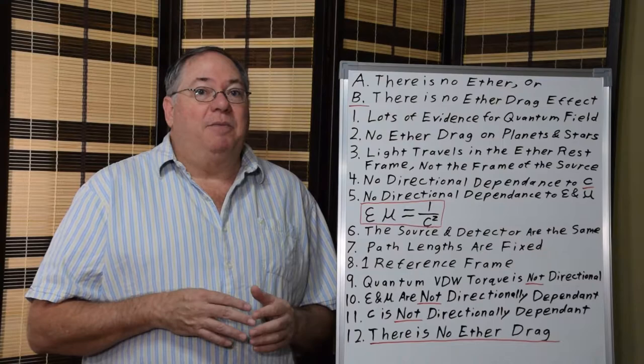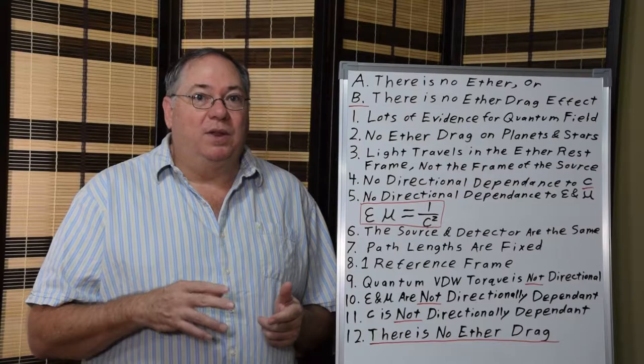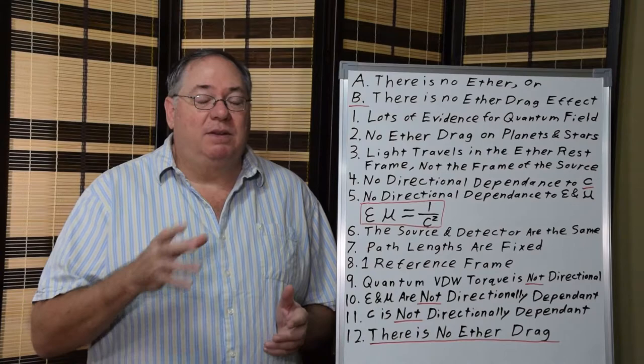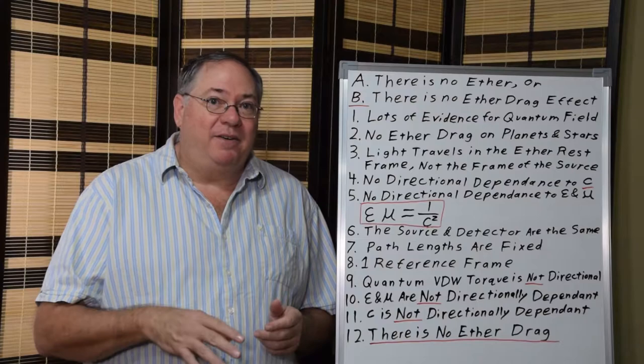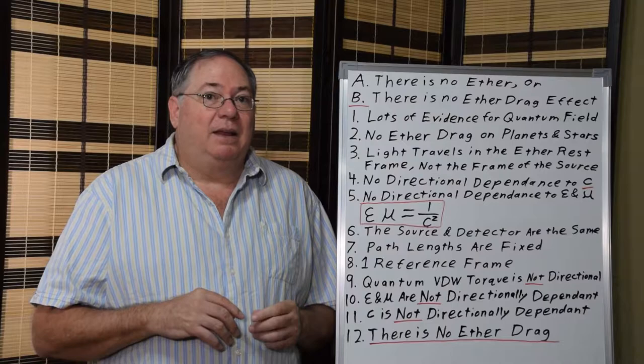And then we have things like the black body radiation in a vacuum where the photons are initiated with an interaction with the quantum field, quantum fluctuation. And we also have spontaneous emission of atoms. When an atom spontaneously emits a photon, that interaction is triggered by a quantum fluctuation.